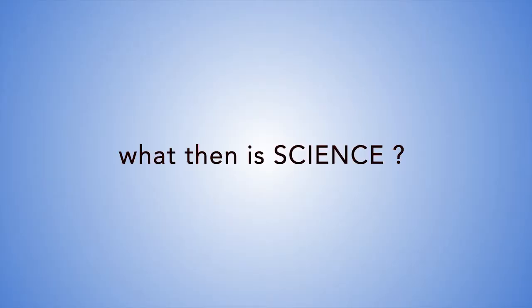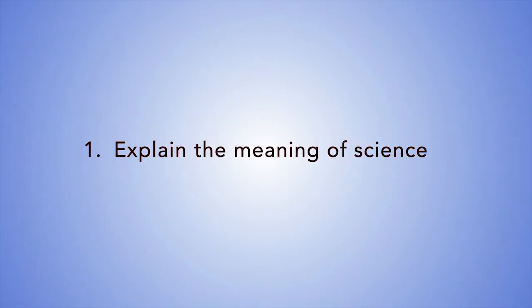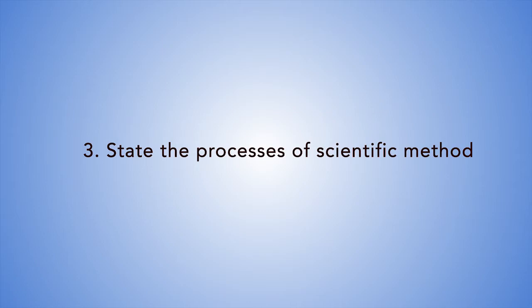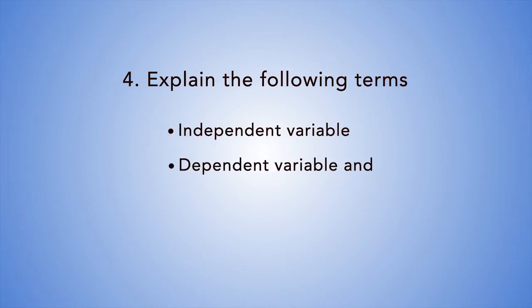What then is science? Before we delve into what science is, let's look at what you should be able to achieve at the end of this lesson. By the end of this session, you should be able to: 1. Explain the meaning of science. 2. Explain what the scientific method is. 3. State the processes of the scientific method. 4. Explain the following terms: independent variable, dependent variable, and control.